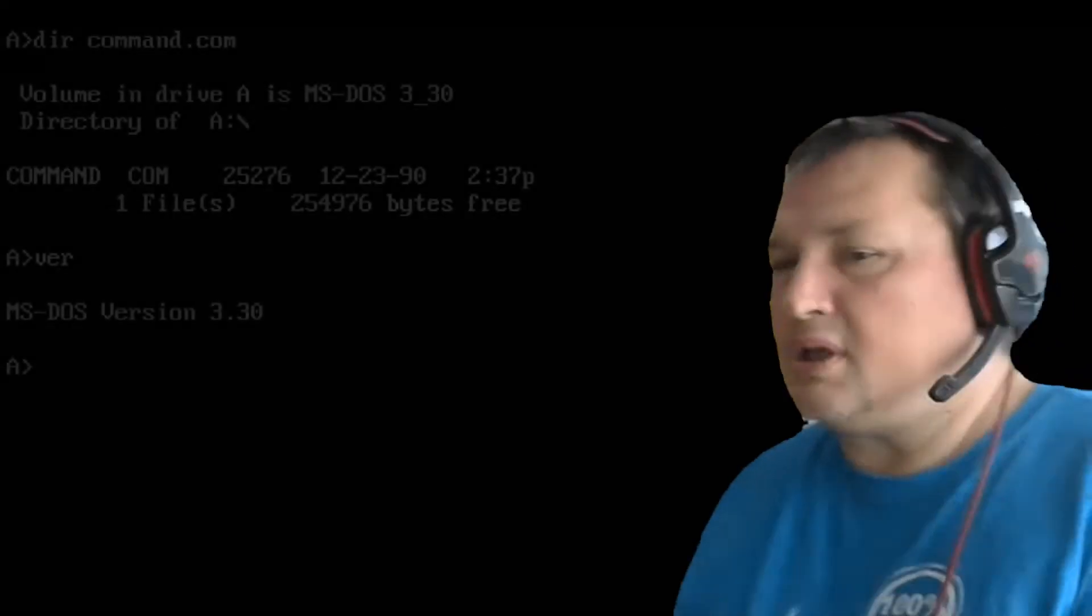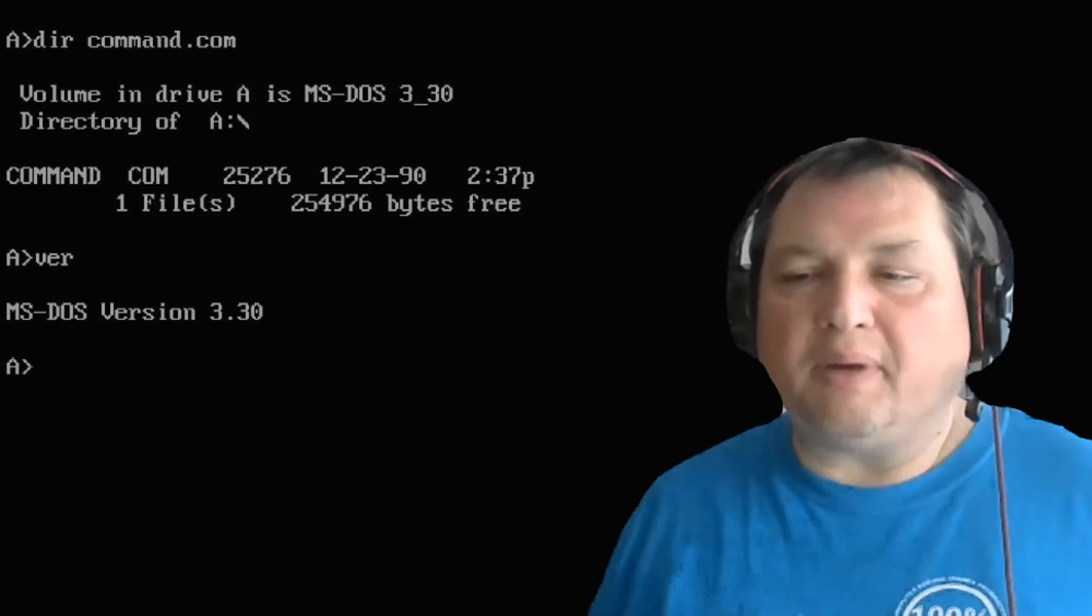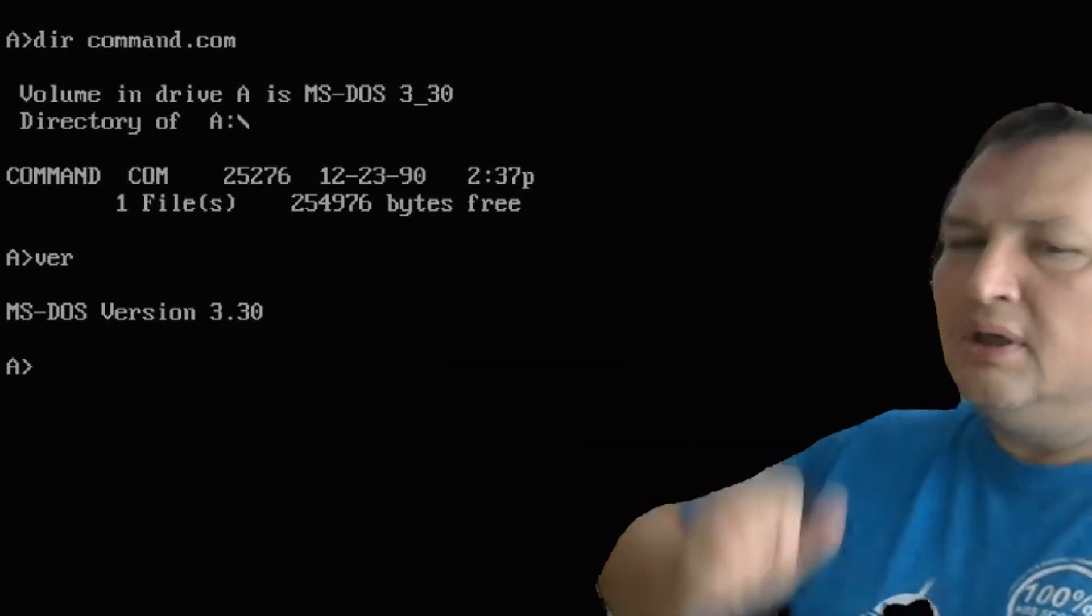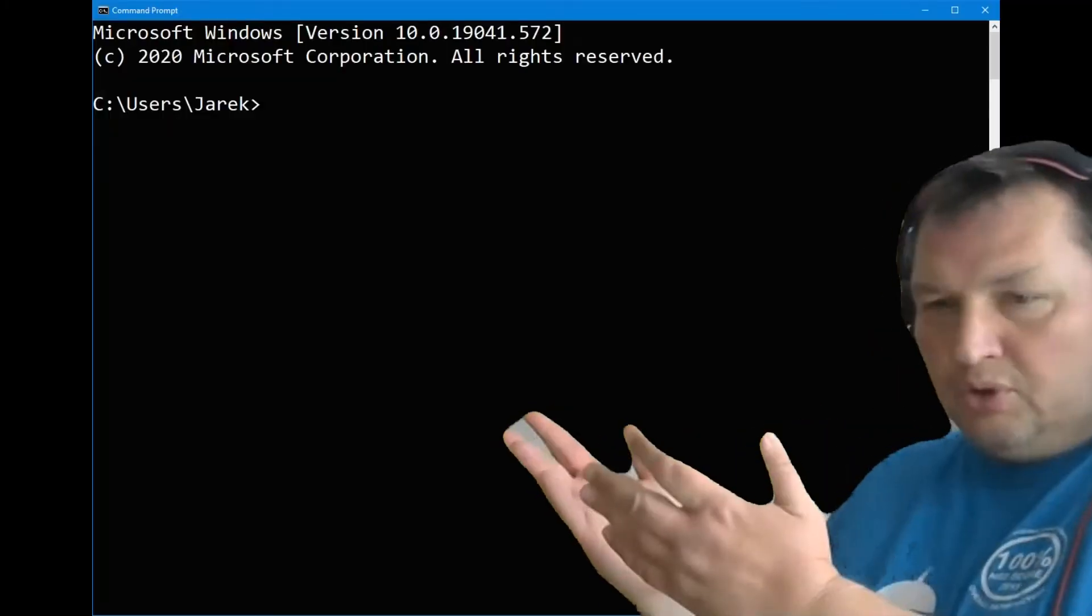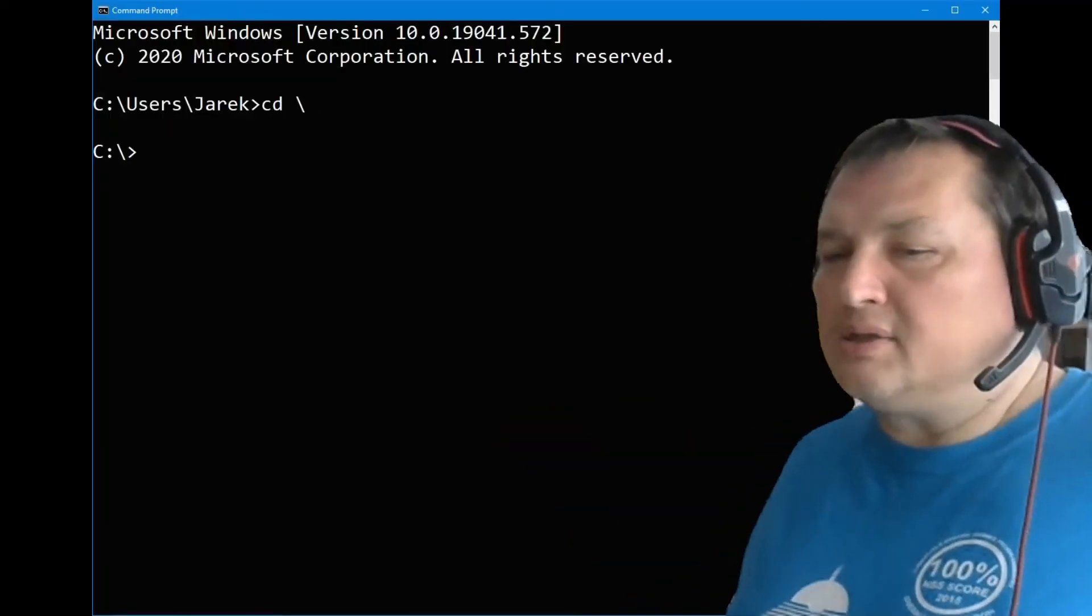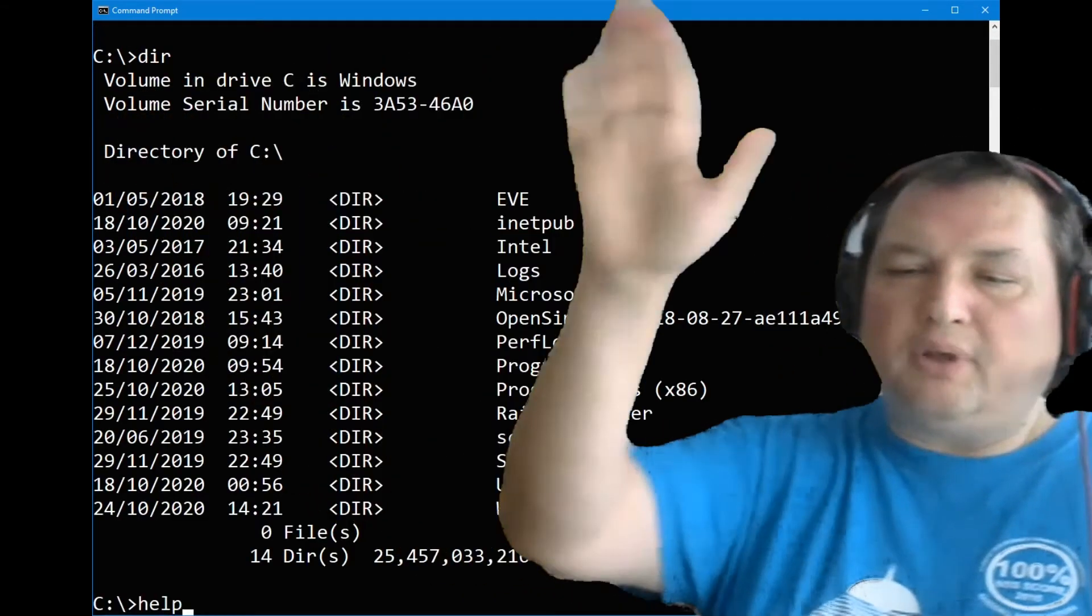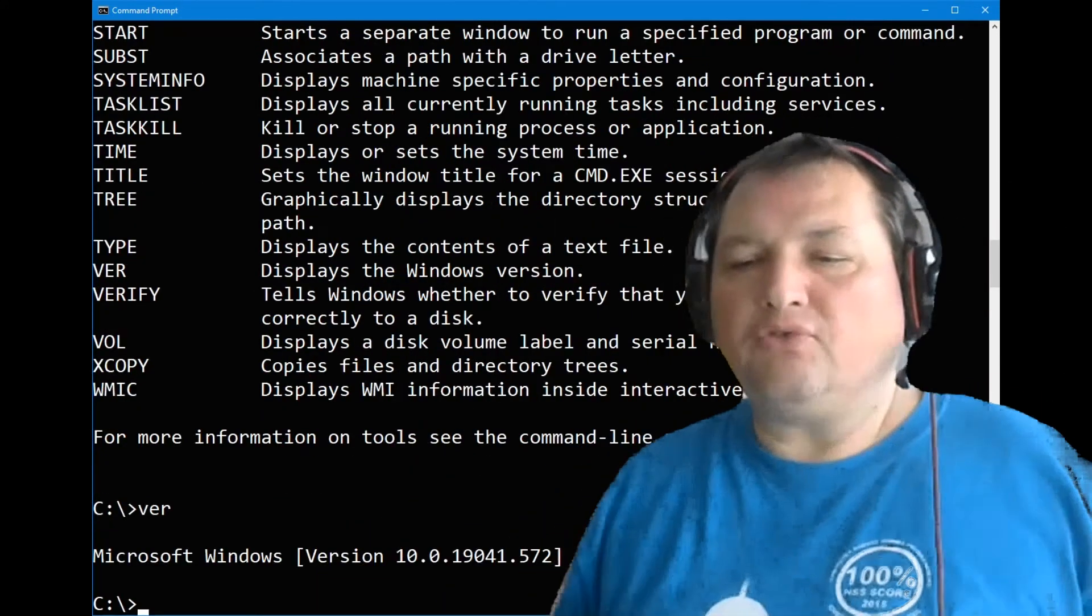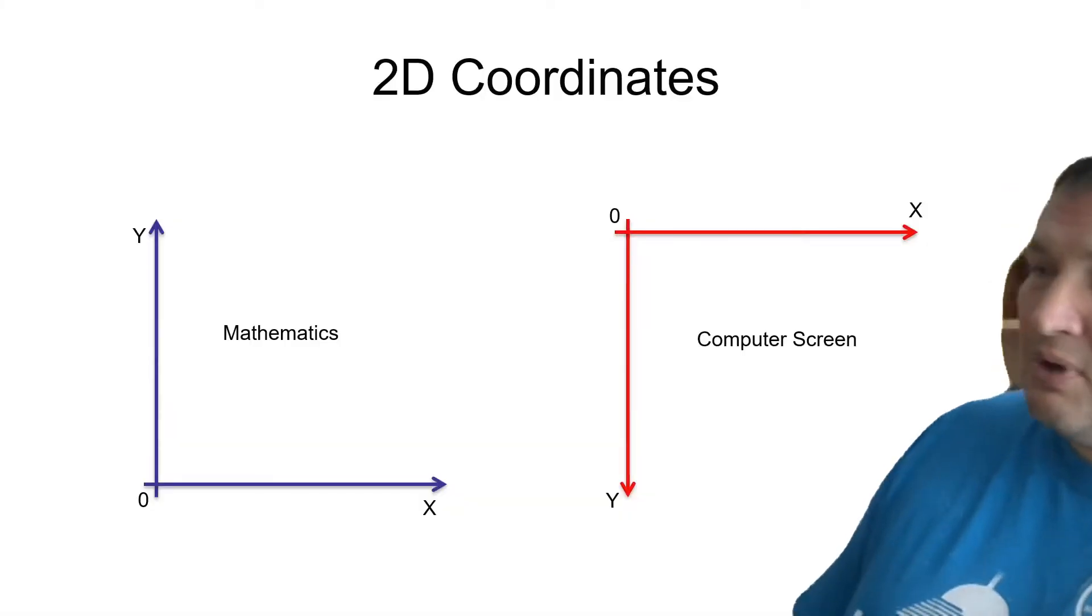Why is that? This is a long-standing legacy dating back to the times when computing was dominated by text mode terminals. For example, this one here is MS-DOS 3.30 released in 1988. Much like in this modern Windows 10 command prompt, the screen was organized into lines and columns. And this system of numbering survived in many modern 2D graphics systems.